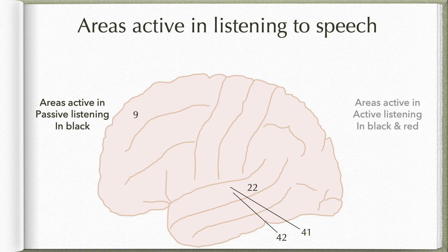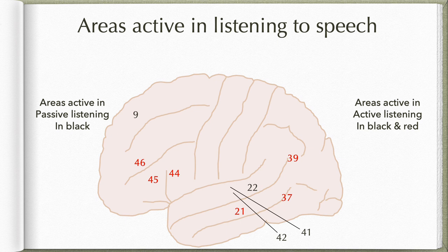But when you are actively paying attention and listening, not only those areas will be activated — even areas 21, 37, 39, 44, 45, and 46 will also light up. So a much larger area of cerebral cortex will be active when you are actively listening, giving you a higher chance of retaining information. That is why when you are actively paying attention in class, you will remember a lot more than when you are passively listening.